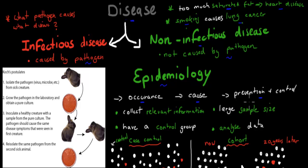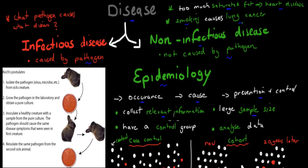There are different features that most epidemiological studies share. We should be collecting relevant information, and we need to have a large sample size. For example, when it comes to lung cancer, we would ask people how much they smoke per day, whether they smoke, whether they are exposed to passive smoking, and what kind of cigarettes they smoke. We wouldn't ask them how much sunlight they get, because we don't think sunlight causes lung cancer. So we collect relevant information to find out the causes of certain diseases.